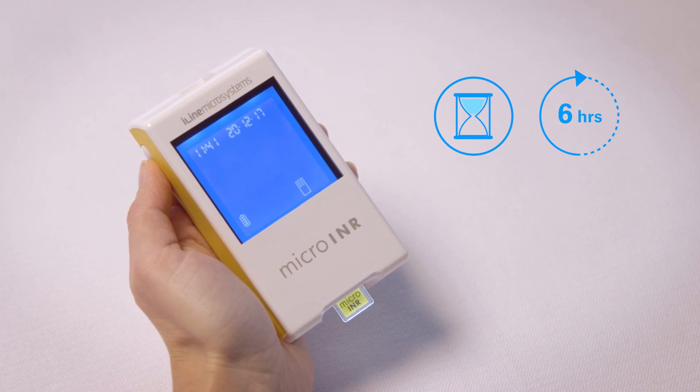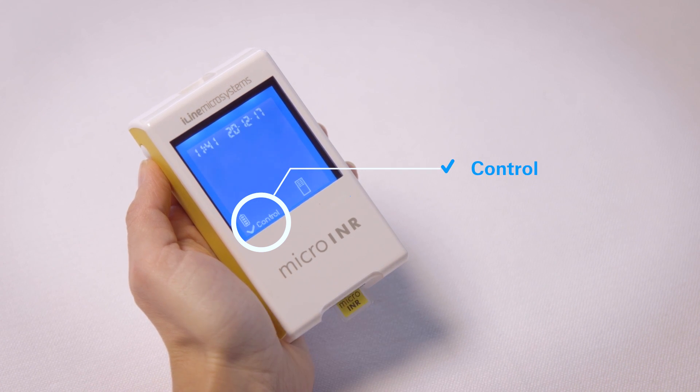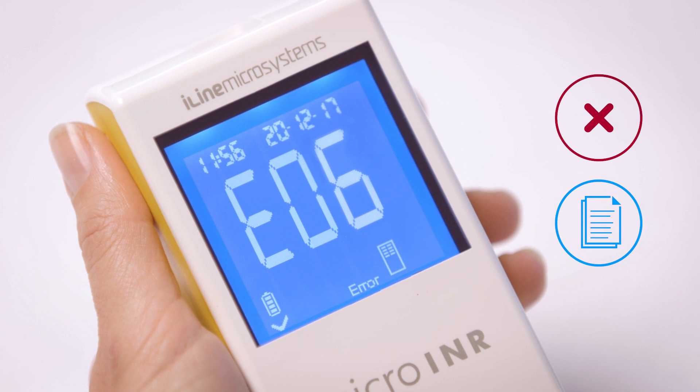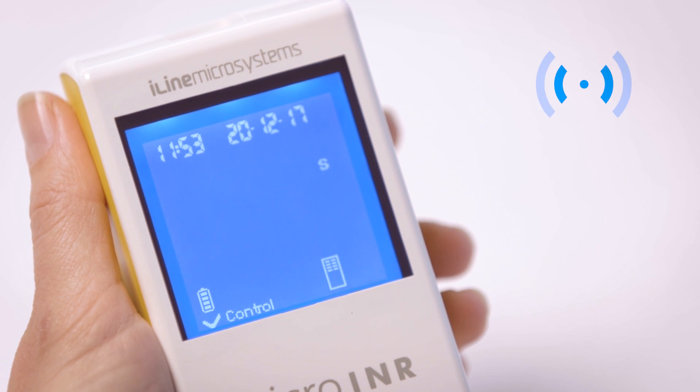The control symbol appears after the internal quality control has been passed successfully. If the internal quality control fails, you will get an error message. Please consult your manual. When the meter is ready for use, you will hear a beep signal. The display will count down from 80 seconds.